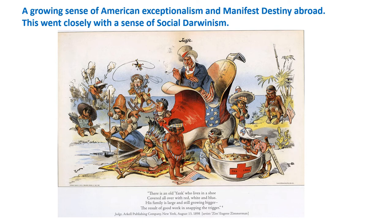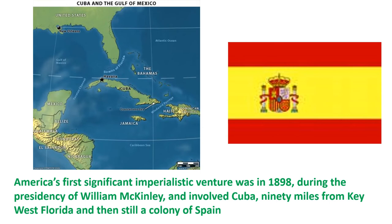America's first significant imperialist venture was in 1898 during the presidency of William McKinley and involved Cuba — 90 miles from Key West, then still a colony of Spain. When in the late 1890s the Cubans began to rebel, the Spanish were brutal in their suppression. In America, jingoist newspapers — sometimes called yellow journalism — such as the Hearst papers began to drum up support for intervention, stoking anger at the Spanish.